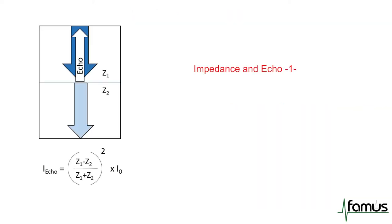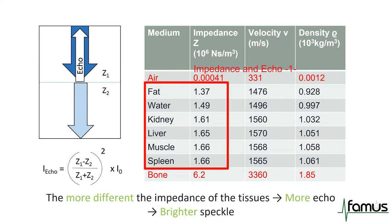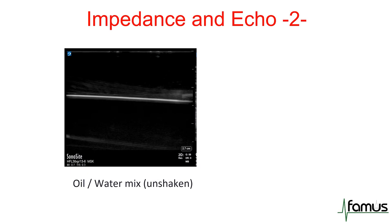When ultrasound is sent out and hits a tissue interface, the impedance difference of both tissues is important. Impedance is resistance to ultrasound, and you can see that impedances between fat and spleen are in a similar range, while air and bone are very far out. The intensity of the echo is bigger the more different the impedances are between tissues, resulting in a brighter speckle. As an example, I used a catheter pack filled with water and added oil on top — when at rest, there is just one interface between oil and water, resulting in a very bright line.